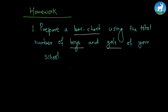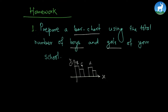With this we come to the end of today's class. I want to give you some homework. In your homework I want you to prepare a bar chart using the total number of boys and girls of your school. Go and find out the total number of boys and girls — you can take the help of your teacher, headmaster, or headmistress — and prepare a bar chart.